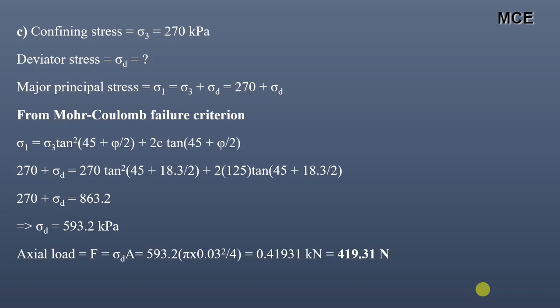Since we have to calculate the axial load which will cause failure of the specimen in the triaxial testing machine, the axial load is simply equal to deviator stress multiplied by the cross-sectional area of the specimen: 593.2 × π × (0.03)² / 4, which equals 0.41931 kilonewton, or 419.31 Newtons.